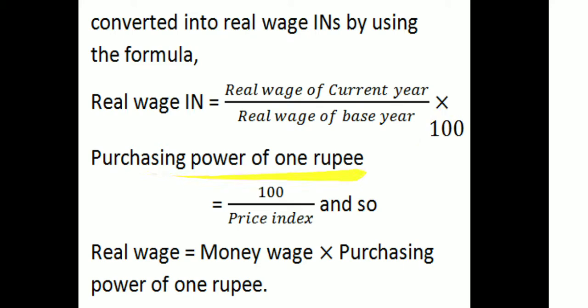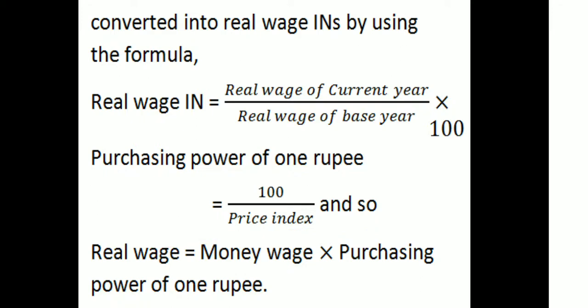Purchasing power of 1 rupee equals 100 divided by price index number. Therefore, real wage equals money wage multiplied by purchasing power of 1 rupee. This is an important relationship.